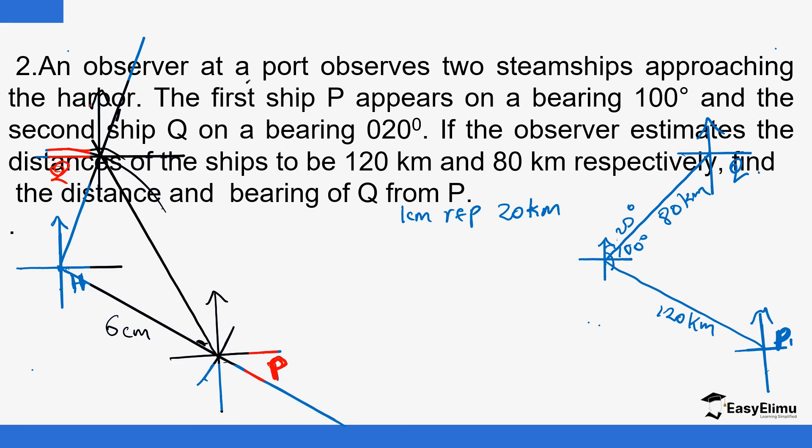So distance, I will just measure the distance in between. So if you measure the distance in between P and Q in terms of centimeters, it is 7.5. So distance equals to 7.5 centimeters, you multiply by the scale, so that is 150 kilometers.